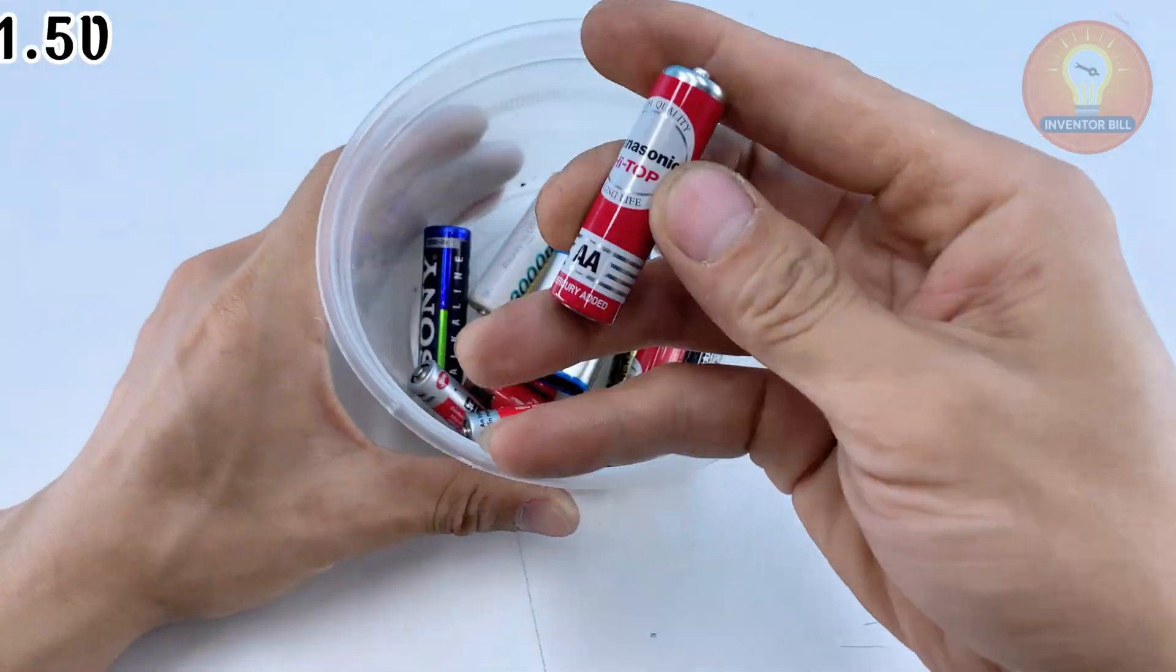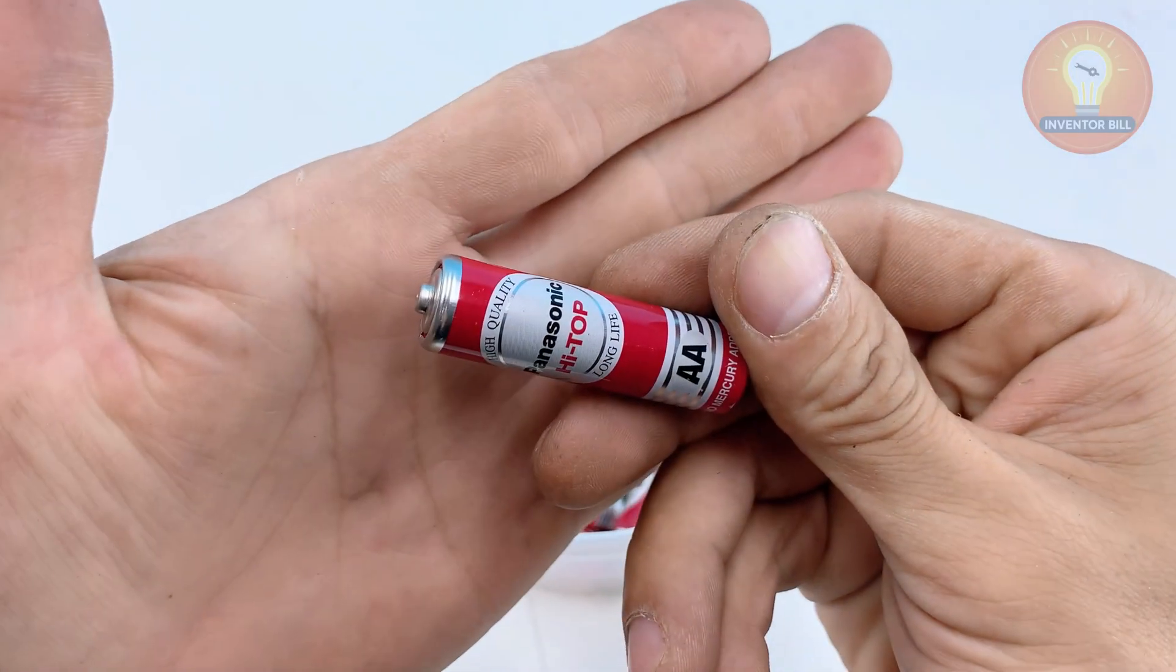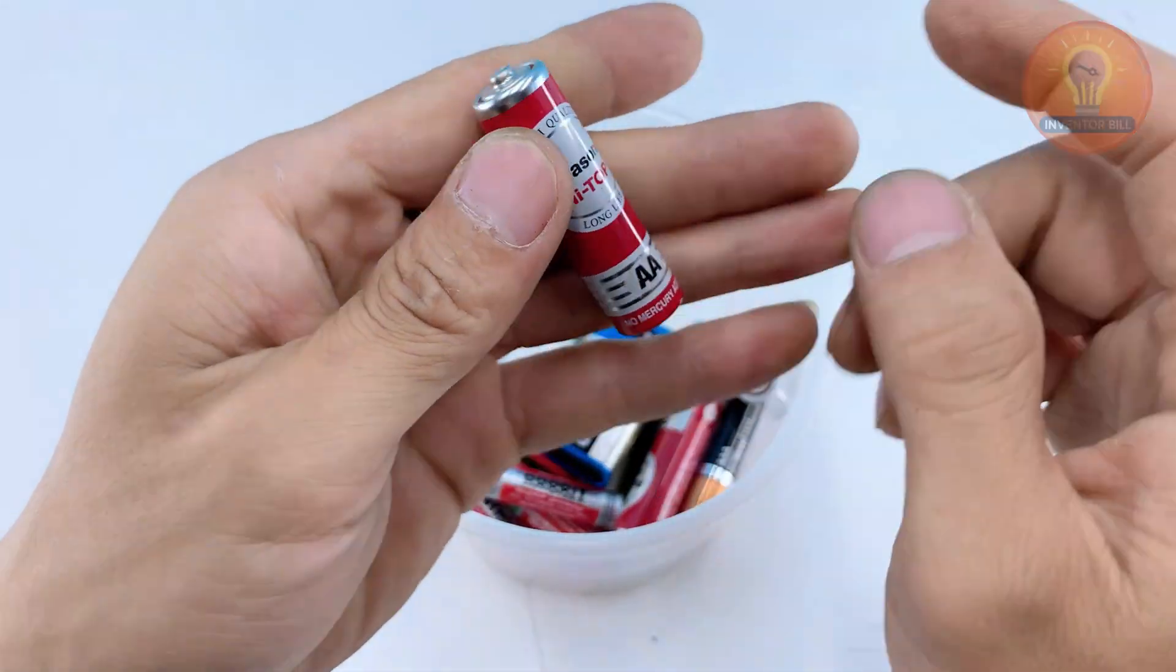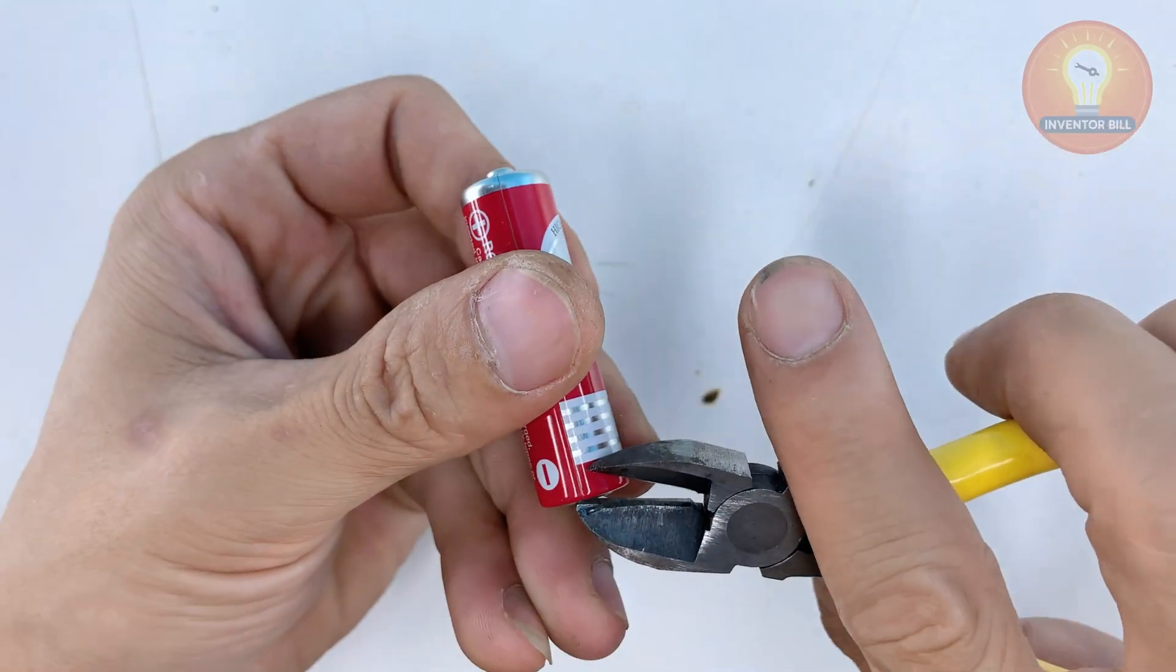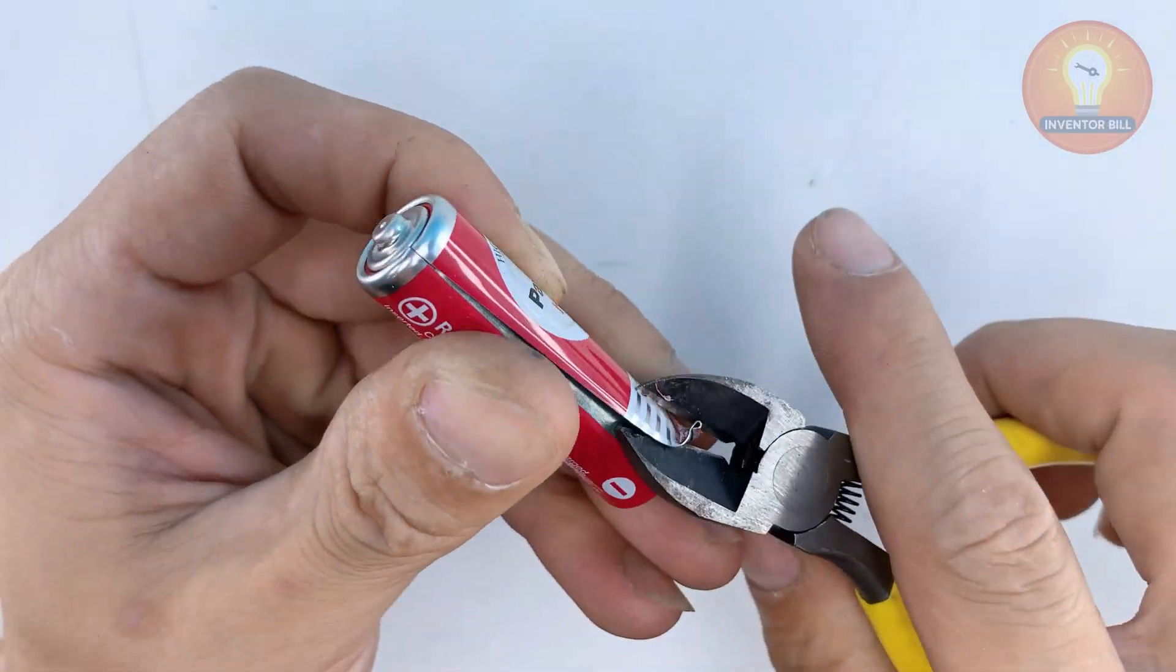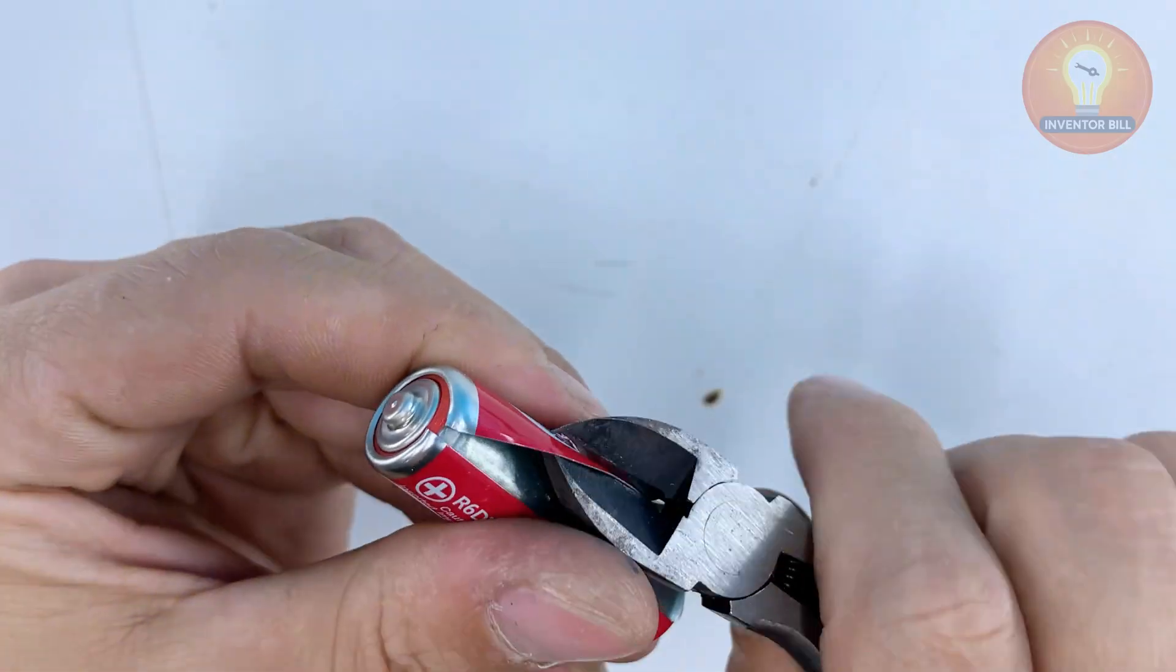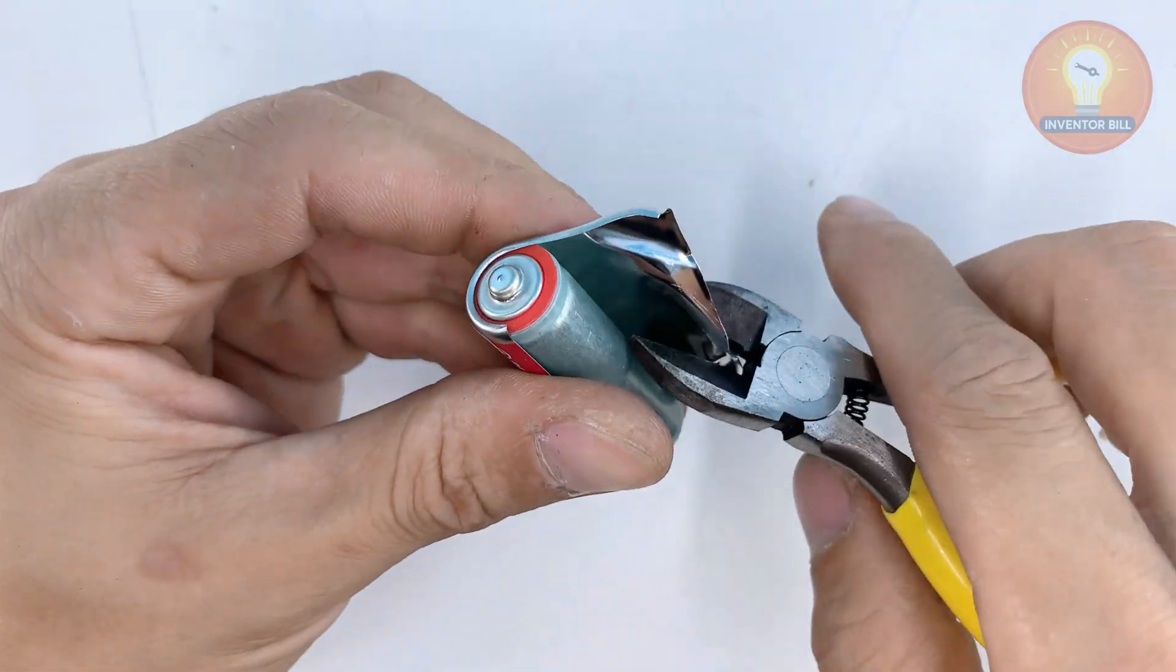After that, grab an old AA battery. Use your pliers to crack the metal shell and peel it open. Let me know your state in the comments. It's always great to see how many DIY folks are out there.